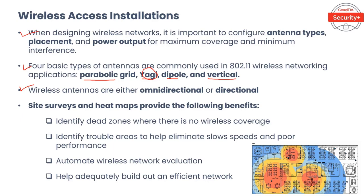Directional antennas concentrate the wireless signal in a specific direction, limiting the coverage area — an example is the Yagi antenna. The use case determines the type of antenna required. When connecting one building to another, a directional antenna is used. When adding Wi-Fi internally to an office, building, or warehouse, an omnidirectional antenna is used. For an outdoor campus environment, a combination of both is used. Site surveys and heat maps identify dead zones, trouble areas with slow speeds, and help build out an efficient network.